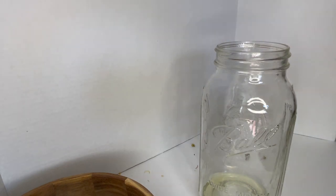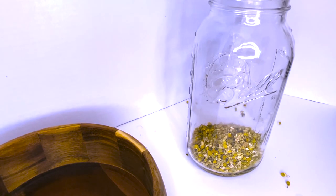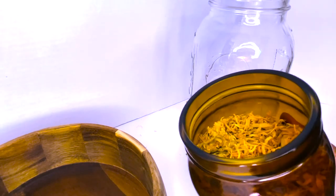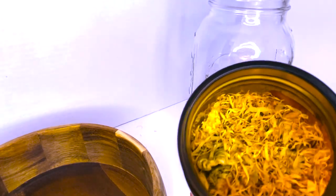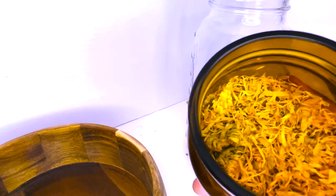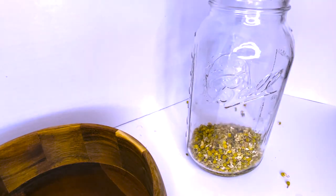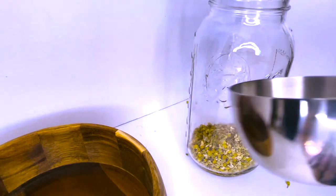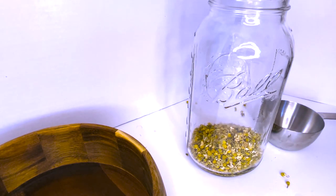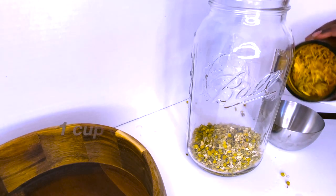Then we're going to add our calendula herbs, and we're going to measure out a cup of this. I really love this herb because it helps with psoriasis and eczema.